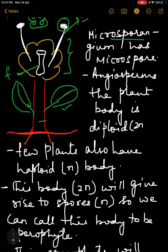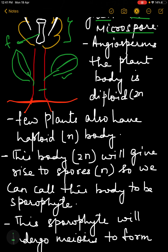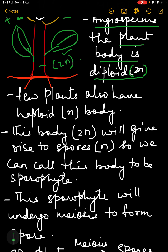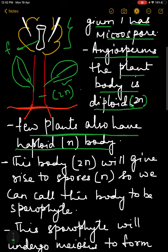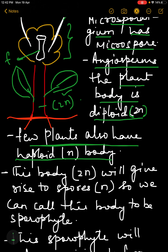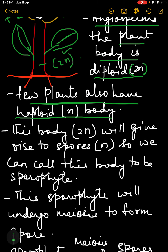Microsporangium has microspores. We all know that angiosperms are the plants where the main plant body is diploid. Now there are many other species of plants where the main plant body is haploid — so exceptions are there, and a few plants have the haploid plant body. But because we are going to discuss angiosperms here, as our chapter is related to sexual reproduction in flowering plants, we will focus on angiosperms.